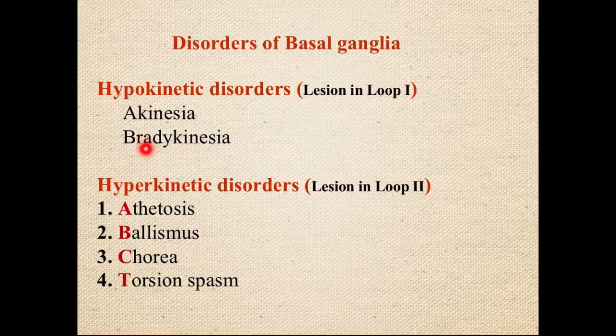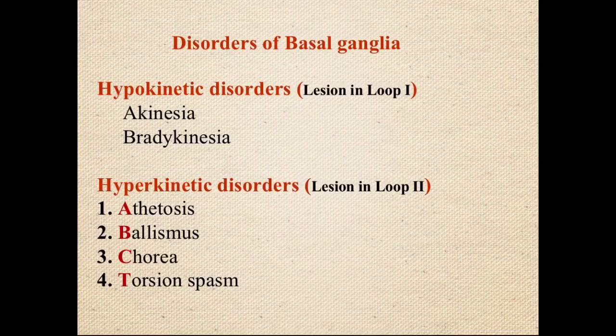If the indirect pathway, referred to as loop two, gets affected, then since the indirect pathway was inhibiting movement, cutting the indirect pathway means that inhibition is lost. There will be exaggerated movement, and those exaggerated movements are called hyperkinetic disorders.